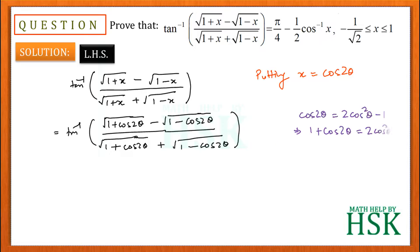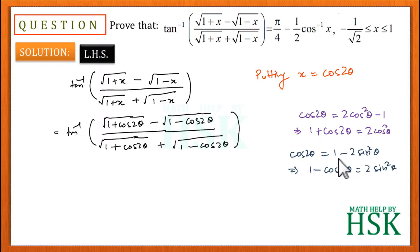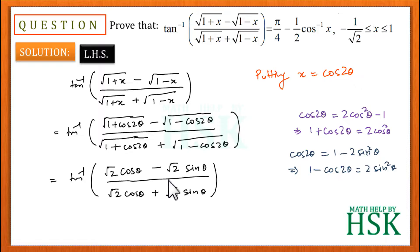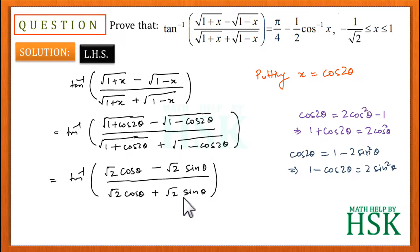Using the result that cos 2 theta equals 2 cos squared theta minus 1, we can write 1 plus cos 2 theta as 2 cos squared theta. And since cos 2 theta equals 1 minus 2 sine squared theta, we write 1 minus cos 2 theta as 2 sine squared theta. Taking square roots, root of 2 cos squared theta gives root 2 cos theta, and root of 2 sine squared theta gives root 2 sine theta.